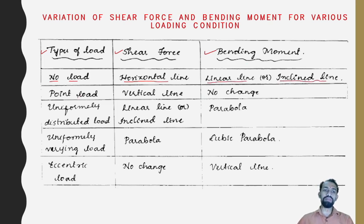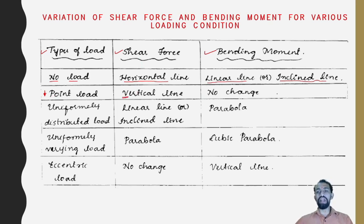When a point load is acting, a vertical line will appear in the shear force diagram. When any member has a point load acting on it, there will be a shear force shown as a vertical line coming in the downward direction.